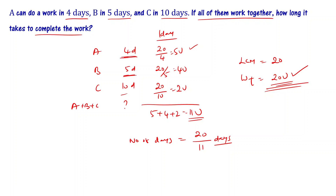So in 20 divided by 11 days, the whole work is completed if A, B, and C work together.